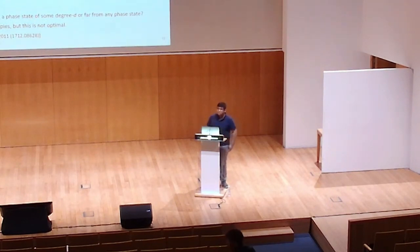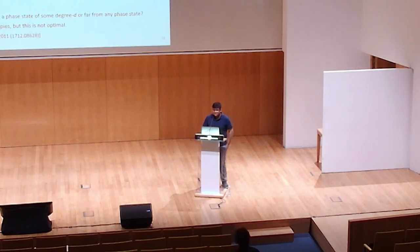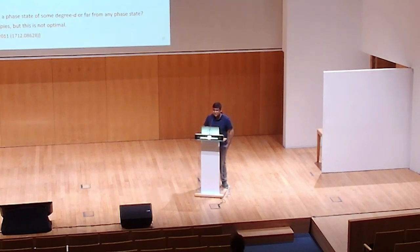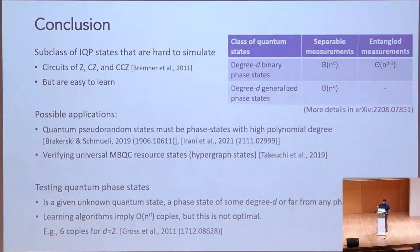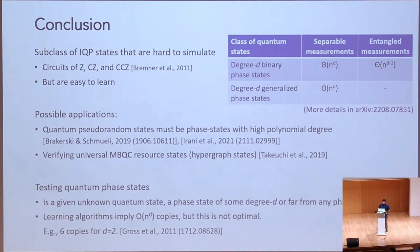On generalizations to complex phases and other roots of unity: for degree-d generalized phase states, you do get complex roots of unity and these can be learned efficiently, as long as you are within the diagonal unitary levels of the Clifford hierarchy, exploiting the group structure. There are other cases with complex phases not yet handled. These results can also be generalized to prime qudit systems.